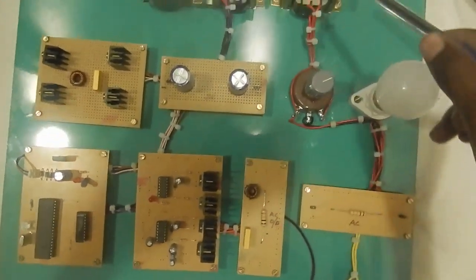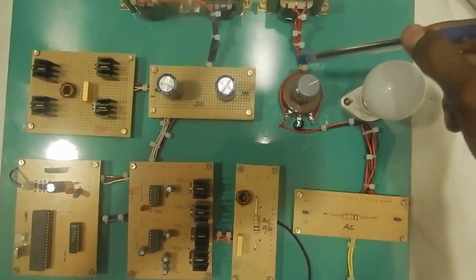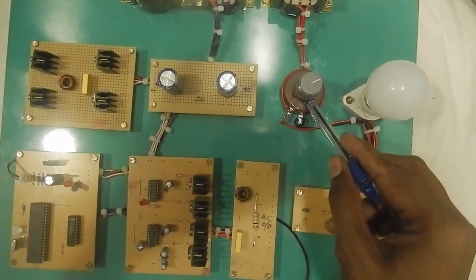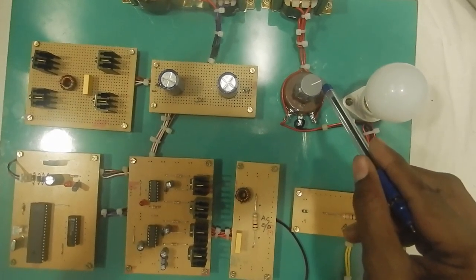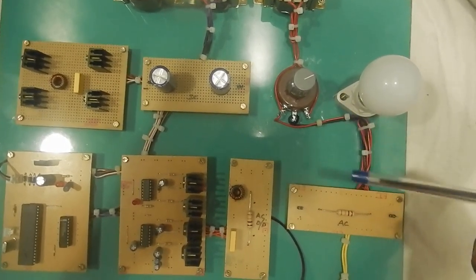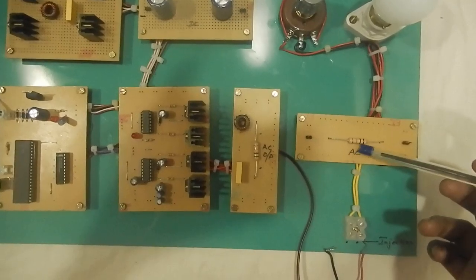This is the line design. From this input, the AC is given, and this is the potentiometer which we used to regulate the AC which is given. This is the LED lamp for indication, and this is the AC load.